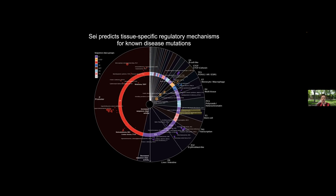For developmental diseases like triphalangeal thumb-polysyndactyly syndrome, the embryonic stem cell enhancer sequence class is predicted to be disrupted by mutations in the known distal enhancer of Sonic Hedgehog — a gene that plays a key role in positioning of limbs and fingers and toes during development. We also have sequence classes in retinoblastoma and melanomas affecting, for example, the TERT promoter. We can look at known disease-associated variants and give them a specific mechanistic explanation — for instance, in melanoma, a variant is disrupting the TERT promoter, which is what's causing that particular phenotype.